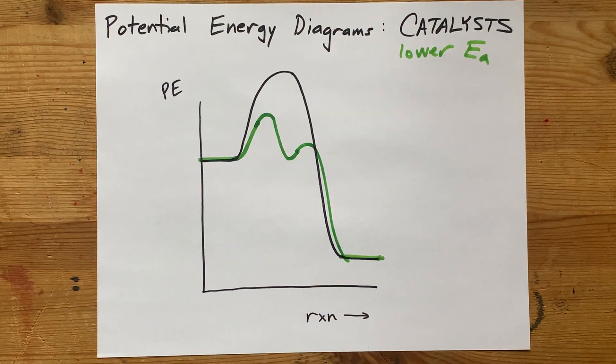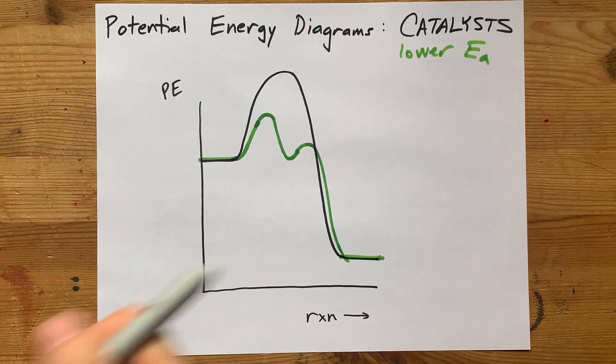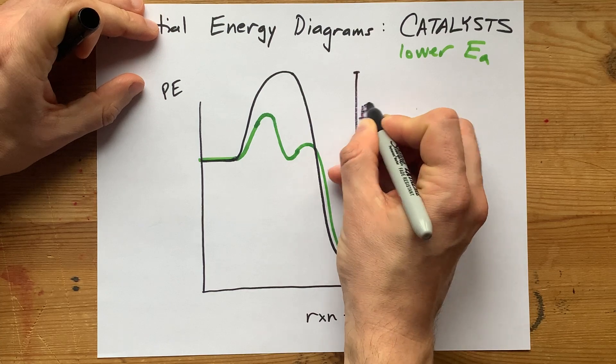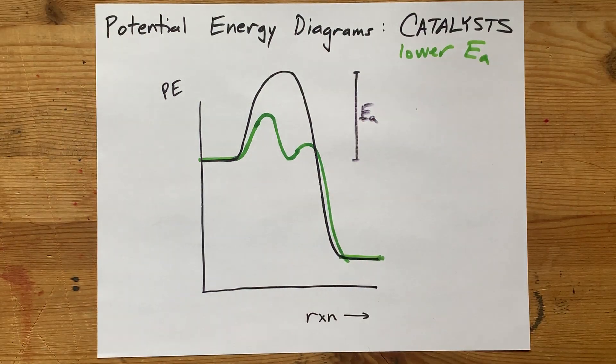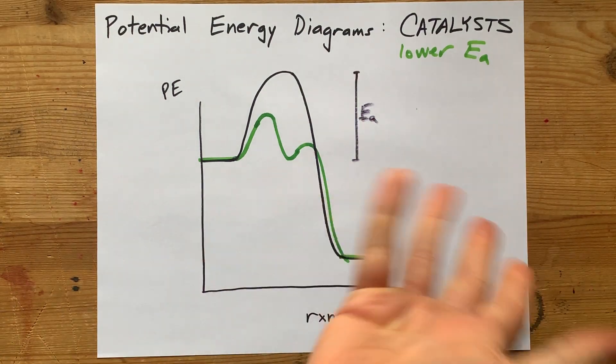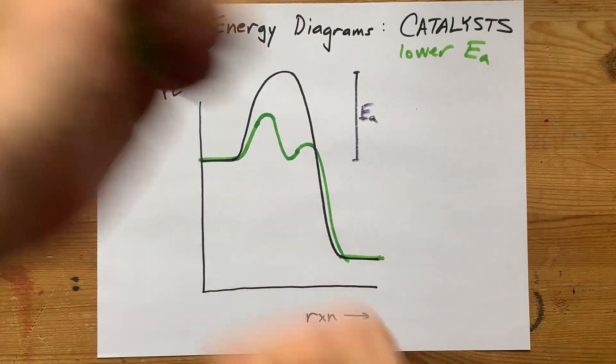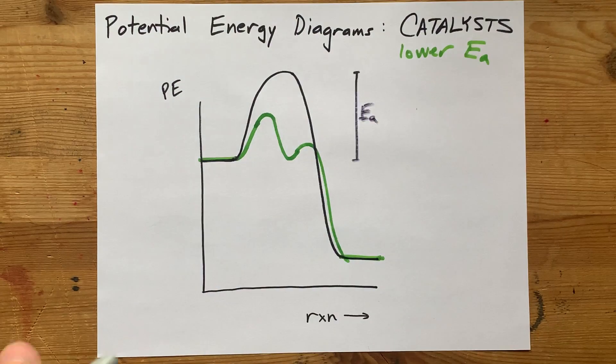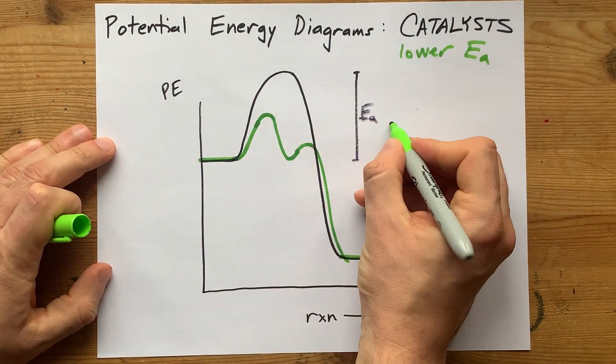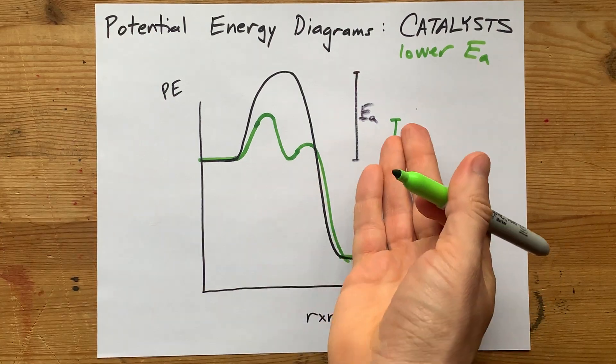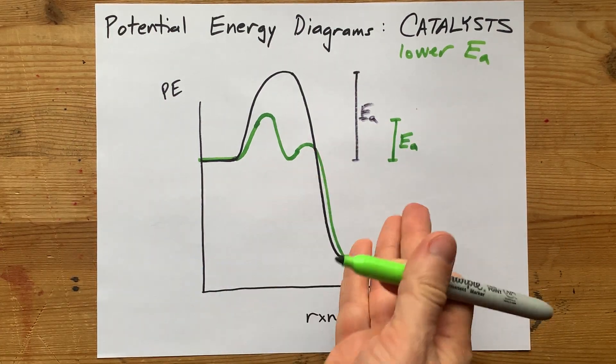And there you go. Now, the point here is that the original reaction required this much energy to happen originally, like as a one-step reaction. I don't know how much energy that is. I didn't label this with numbers. It's just two molecules hitting each other with enough energy. But when the catalyst is around, this is enough. That's less energy, and that makes the reaction more favorable.